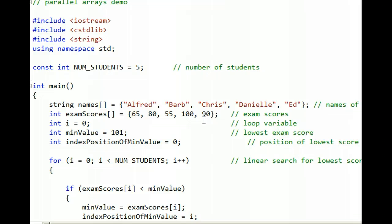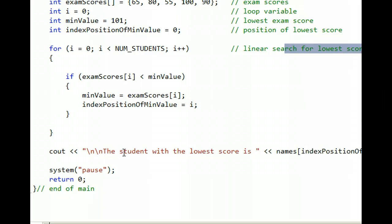When we run this program, we are going to use a linear search, also known as a sequential search, to find the lowest score. And then we're going to print out the student's name who had the lowest score.